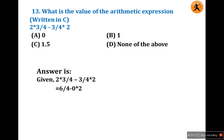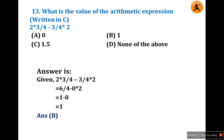Next we have division, minus, and multiplication remaining. Division and multiplication are equal priority, so from left to right: 6 ÷ 4 = 1 (integer division). Then 0 × 2 = 0. Finally 1 - 0 = 1. Answer is B.